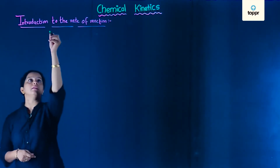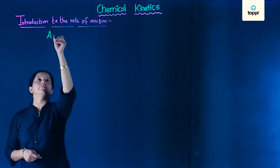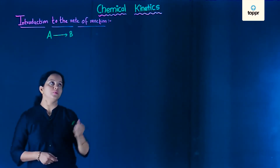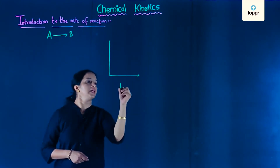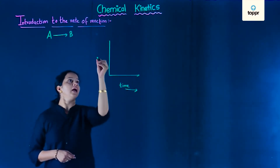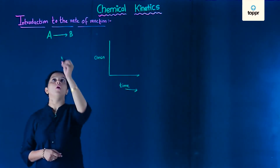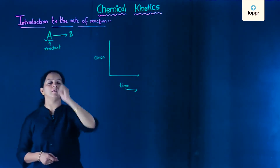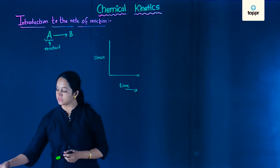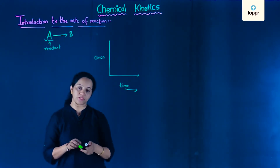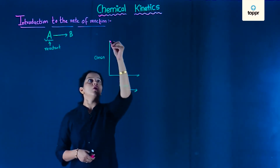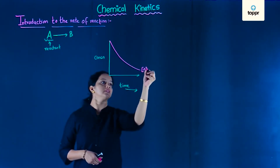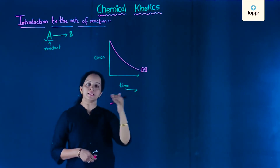Let us consider a chemical equation wherein reactant A is getting converted to product B. Now as the time proceeds, what happens to the concentration of reactant A? The concentration of reactant A goes on decreasing as the time proceeds.